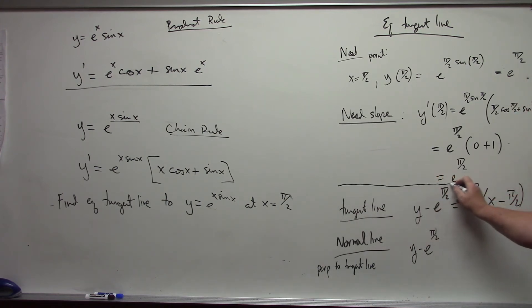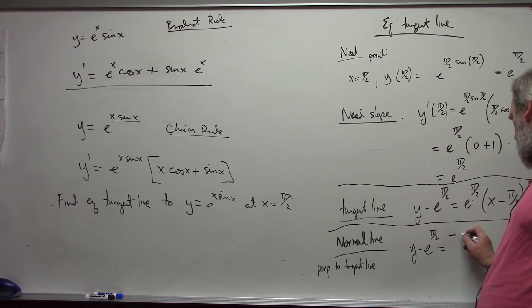This is a little bit messy. x minus pi over 2 equals... perpendicular lines, the slopes are negative reciprocals, and so it would be negative 1 over e to the pi over 2, which I could have just written as negative e to the negative pi over 2, but I want to emphasize what's happening here. x minus pi over 2.